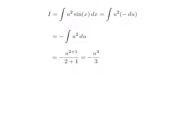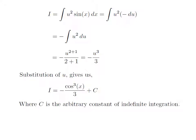Taking minus out, we got i is equal to minus of integration of square of u with respect to u. As integration of square of u with respect to u is equal to u to the power 2 plus 1 divided by 2 plus 1, that is cube of u divided by 3. So i is equal to minus of cube of u divided by 3.